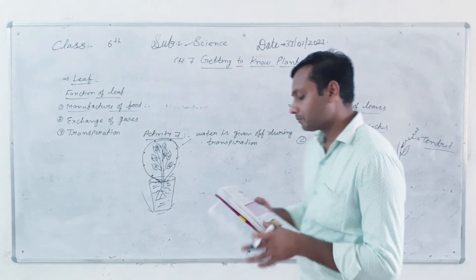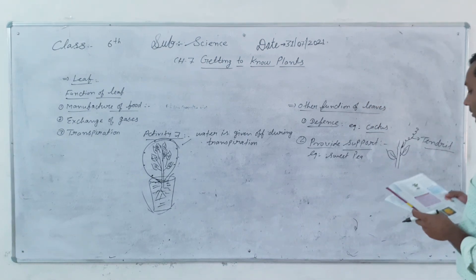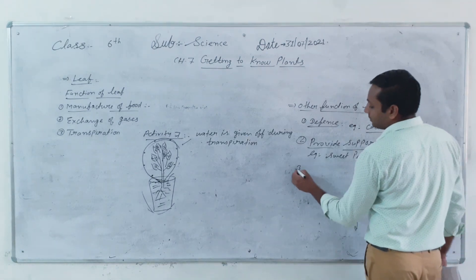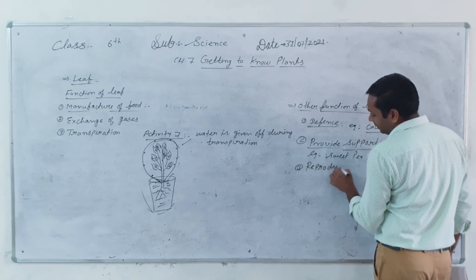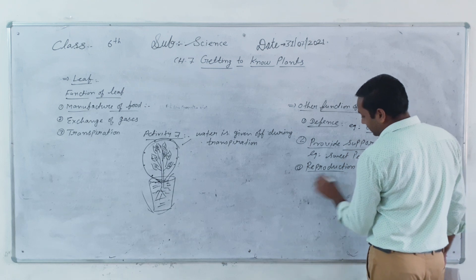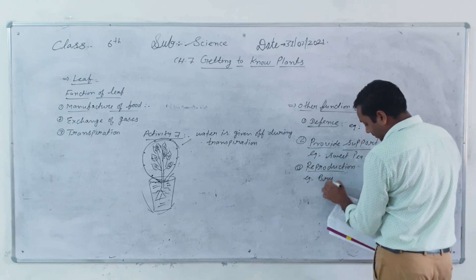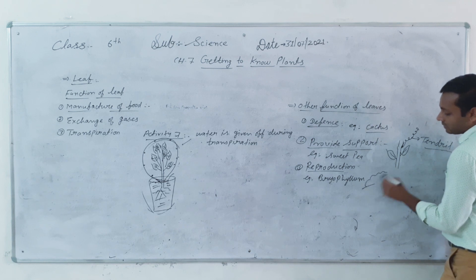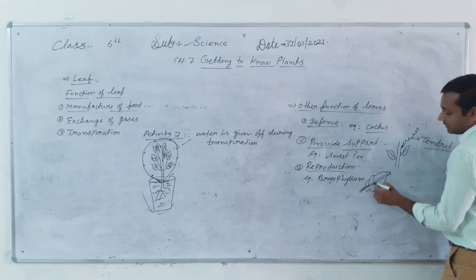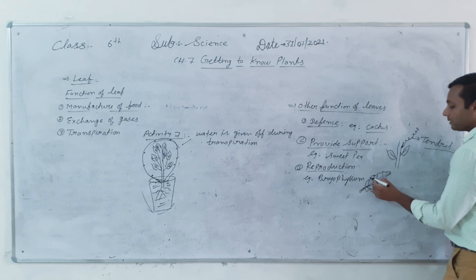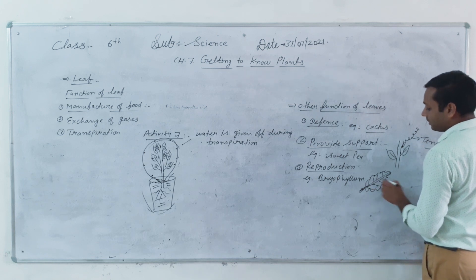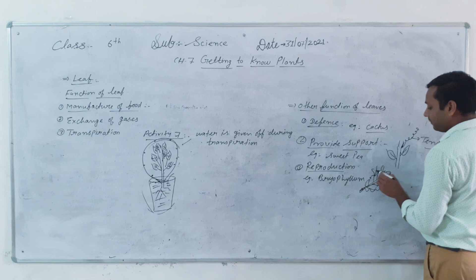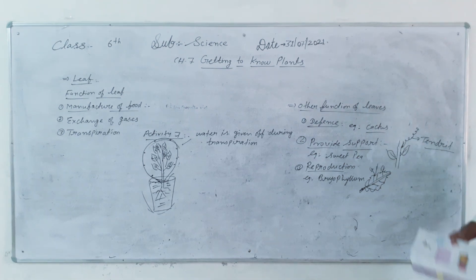Next is reproduction. Some plants reproduce through leaves. For example, Bryophyllum — in the margin of the leaf, buds will germinate and grow into new plants.